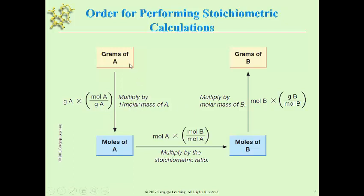Molar mass is not the same as mass — mass is something that would have to be given. Once you have moles of the substance you start with, you can convert to moles of the substance you're trying to figure out. Once you have moles of that second substance, you can convert to grams of it using its molar mass. The molar mass of A is used on one side; the molar mass of B is on the other side. You're either dividing by molar mass using the reciprocal or multiplying by molar mass, depending on what you're trying to cancel. So the general scheme is: gram A → mole A → mole B → gram B.